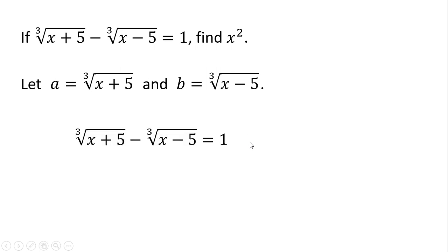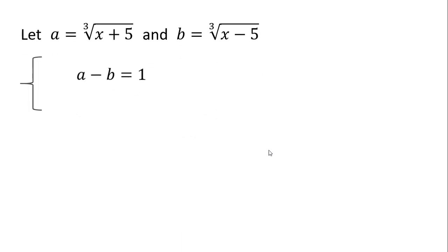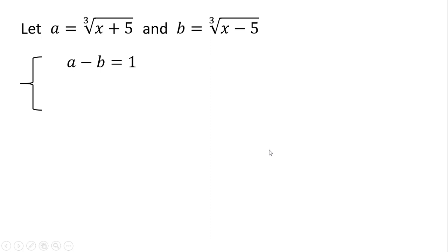So the original equation becomes a minus b equals 1. Now I'm going to derive another equation by getting the difference of a cubed and b cubed. Notice that if we do this, we can actually eliminate the radical and the variable x.